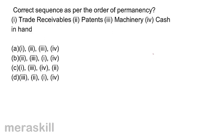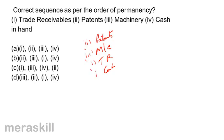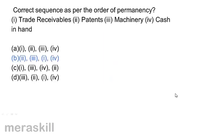Correct sequence as per order of permanency. Trade receivables is 1, patents 2, machinery 3, and cash in hand 4. The most permanent asset is patents, followed by machinery, followed by trade receivables, followed by cash. So the sequence is 2, 3, 1, and 4. Correct answer is B: 2, 3, 1, and 4.